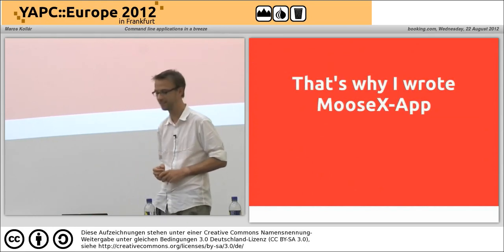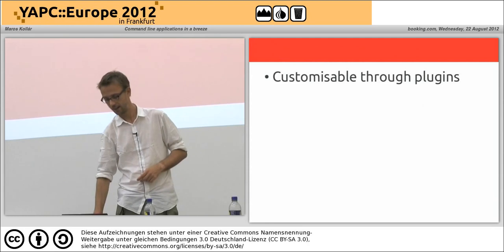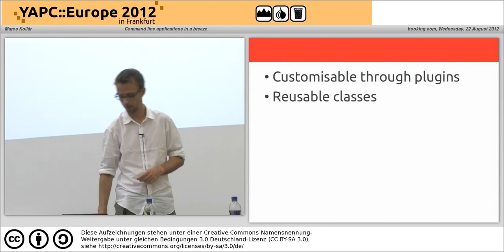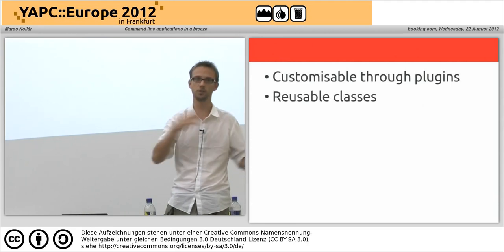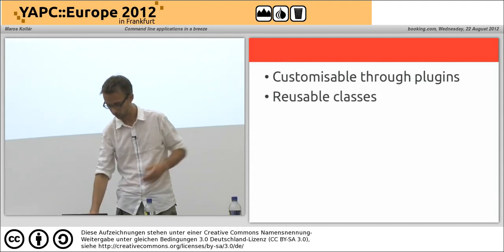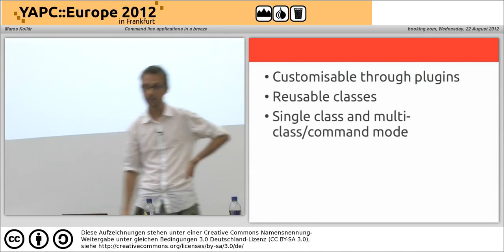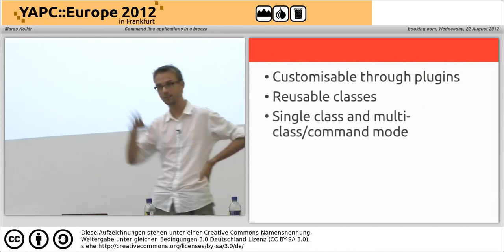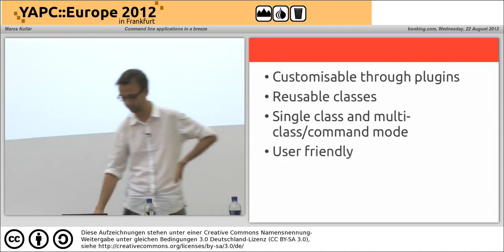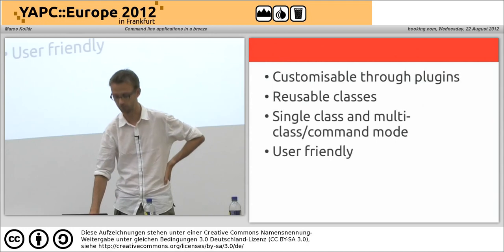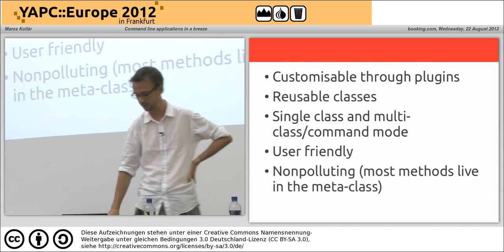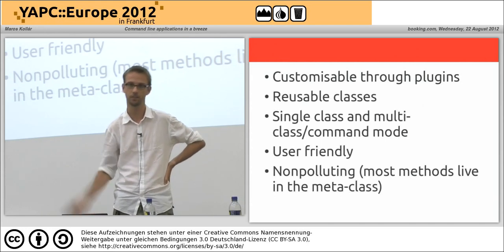I have a solution for that called MooseX::App, and it's quite customizable through plugins. The classes are reusable — you can use all the classes in a command line interface context and in an ordinary context. It has single-class and multi-class command mode, so it can replace both MooseX::Getopt and MooseX::App::Cmd. It's quite user friendly, and it's non-polluting because most methods live in the meta class, not in the class itself.